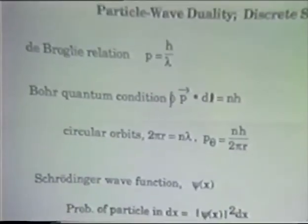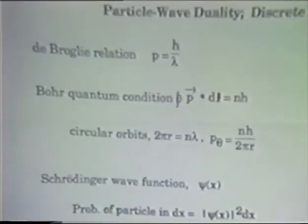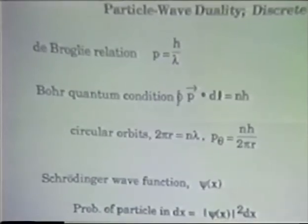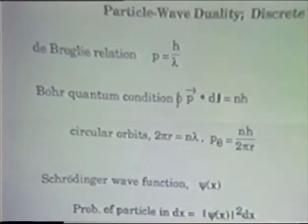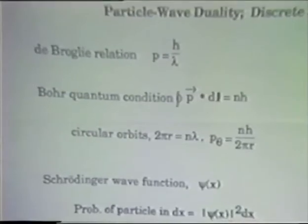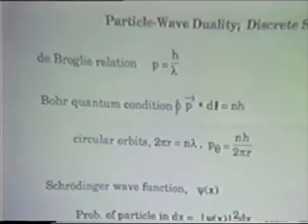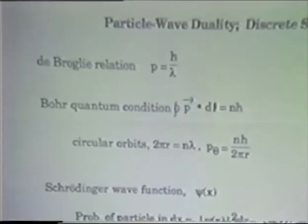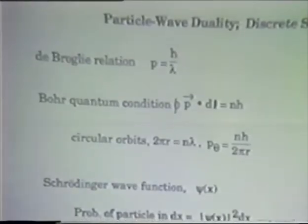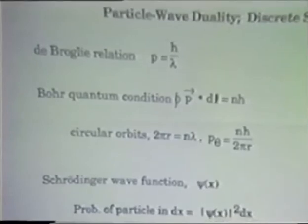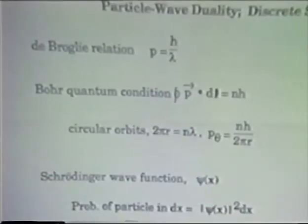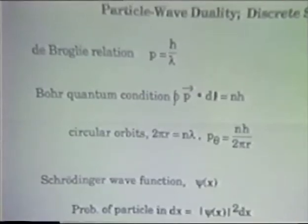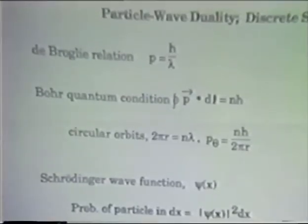The Bohr quantum condition is that the line integral of the momentum around the loop is an integral multiple of Planck's constant h. For a circular orbit, that means 2πr times the momentum is equal to nh, or the momentum is equal to nh over 2πr.